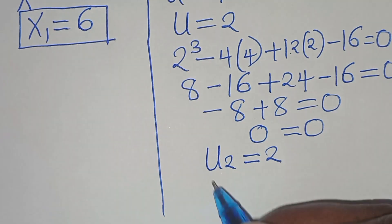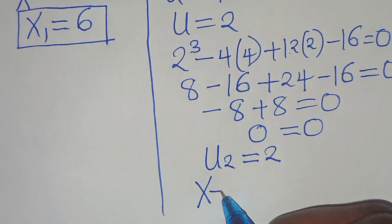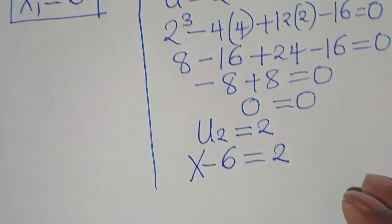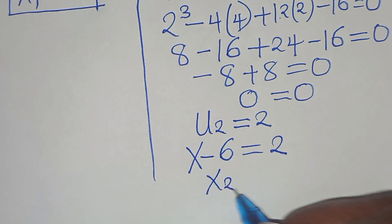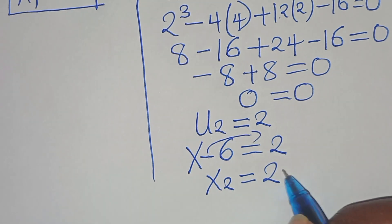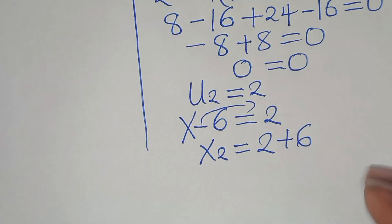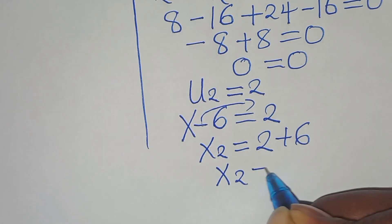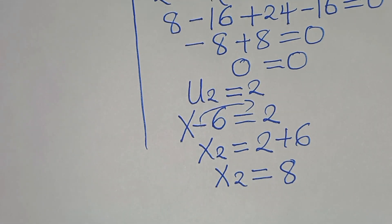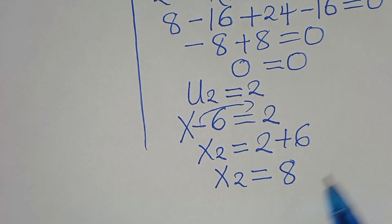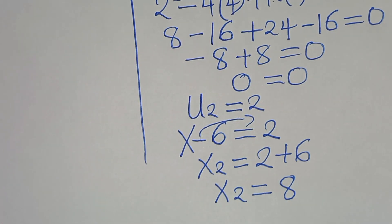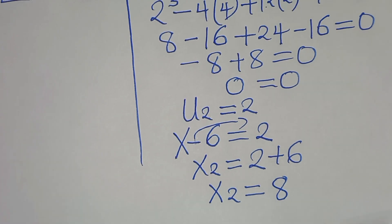We can now solve for x. Since x minus 6 equals u, and u equals 2, this implies the second value of x, x₂, equals 2 plus 6, which equals 8. Given that u₂ equals 2, we can use synthetic division to find the remaining values of u.